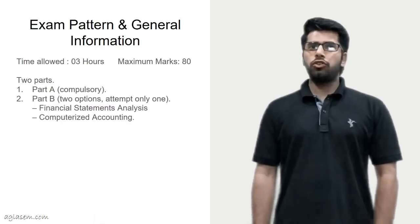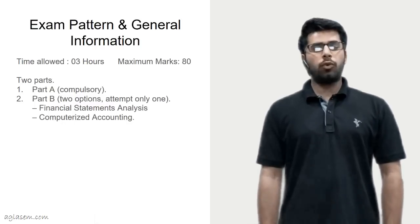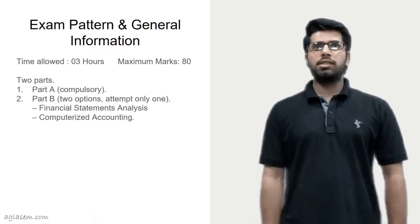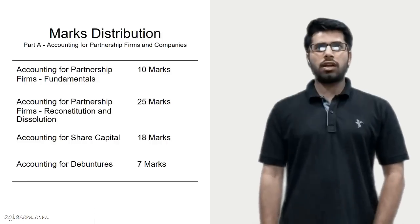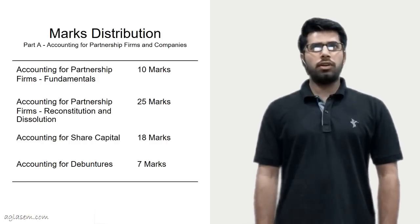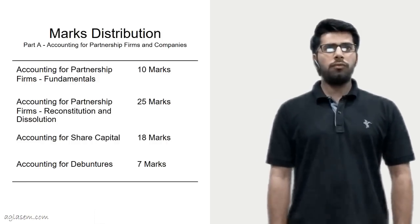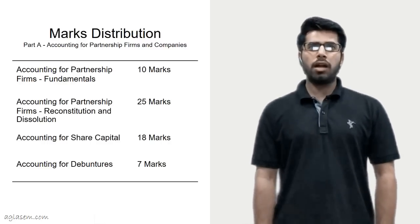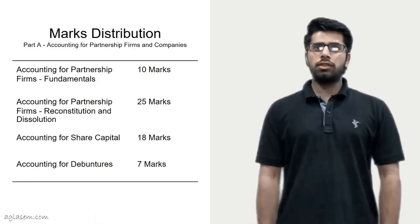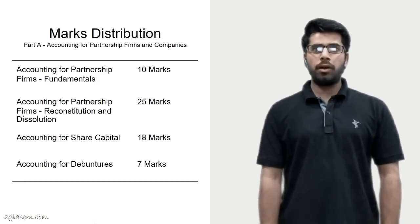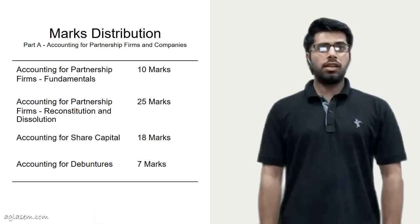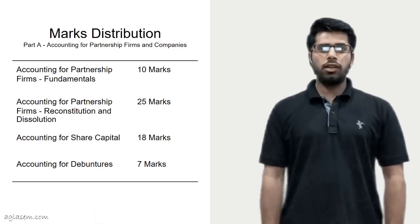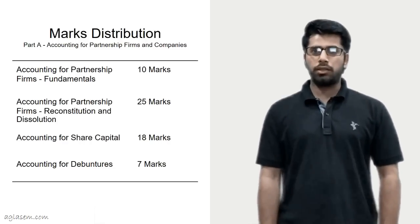All parts of question should be attempted at one place. Now, let's talk about marks distribution. Part A consists of accounting for partnership firms and companies. Accounting for partnership firms fundamentals consists of 10 marks. Accounting for partnership firms reconstitution and dissolution consists of 25 marks, accounting for share capital consists of 18 marks, and accounting for debentures consists of 7 marks.